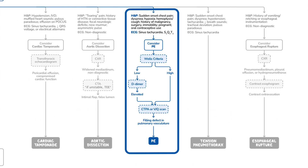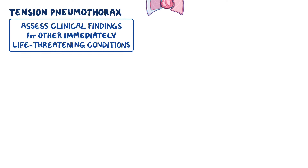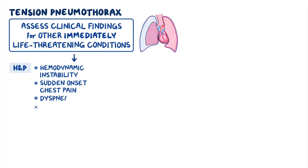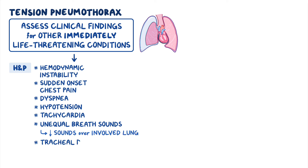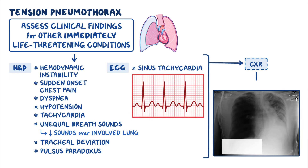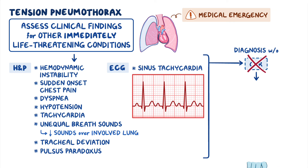Another possible cause of sudden onset chest pain is tension pneumothorax. This is a particularly serious type of pneumothorax where air gets trapped in the pleural space so that it displaces mediastinal structures and causes hemodynamic instability. The patient can present with sudden onset chest pain with dyspnea, hypotension, tachycardia, unequal breath sounds with decreased sounds over the involved lung, tracheal deviation, and pulsus paradoxus. ECG may show sinus tachycardia, while chest x-ray may show a collapsed lung and mediastinal shift away from the affected side. However, tension pneumothorax is a medical emergency, so you should make the diagnosis clinically without waiting for a chest x-ray. After the diagnosis is made, immediately treat with needle decompression.